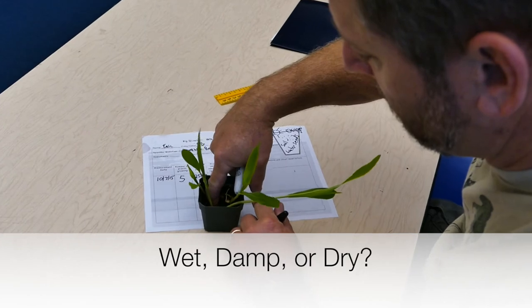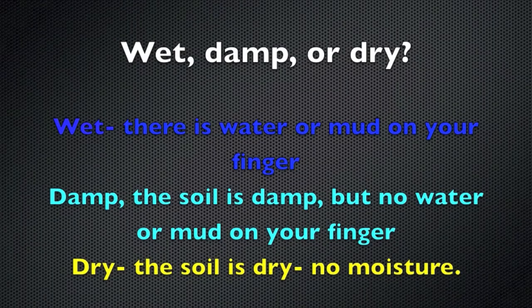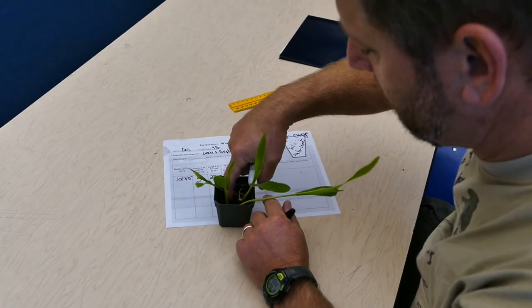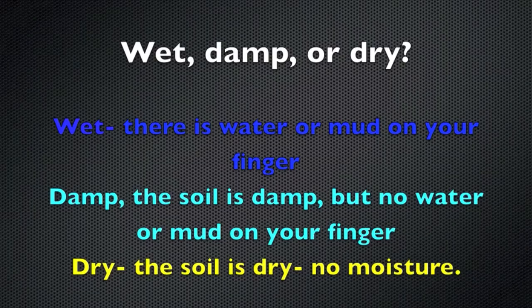Is the soil or paper towel wet, damp, or dry? If it's wet, you'll see water or mud on your finger if you stick it in. If it's dry, it will feel dry with no moisture at all. And if it's damp, it means you feel some moisture, but there's no mud or water on your finger.